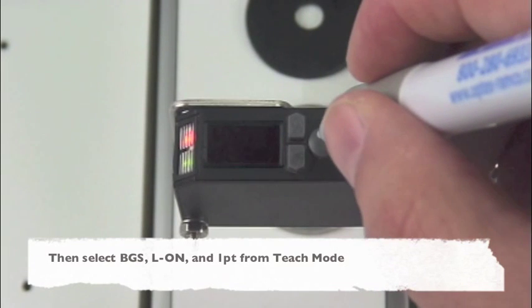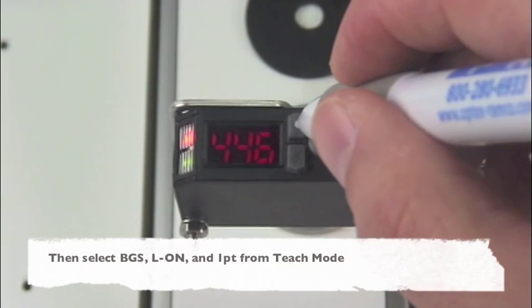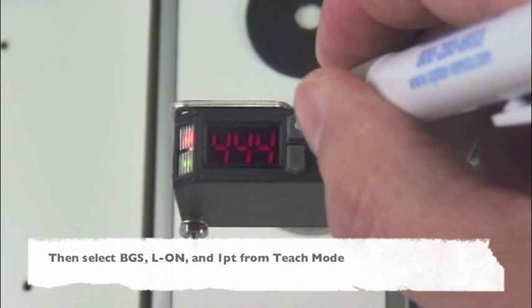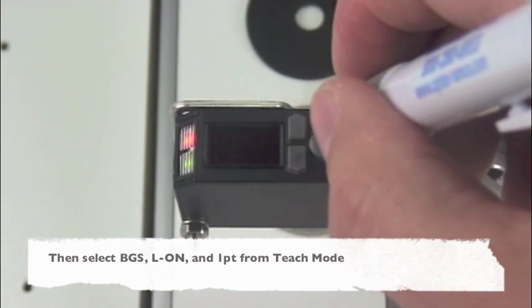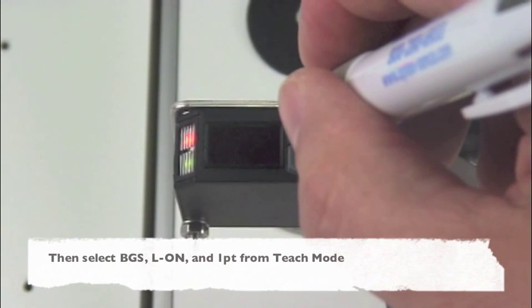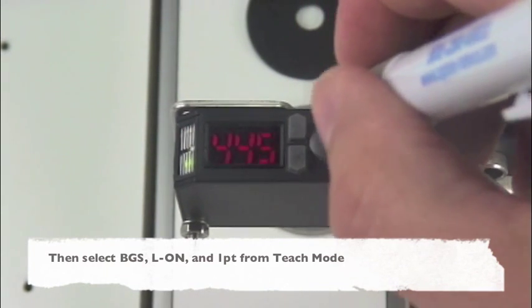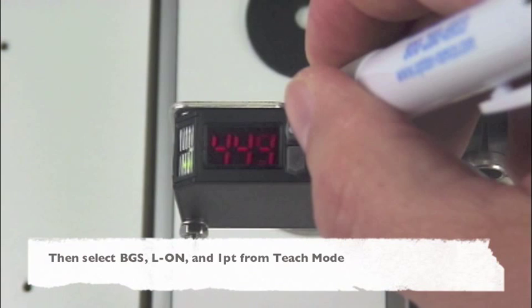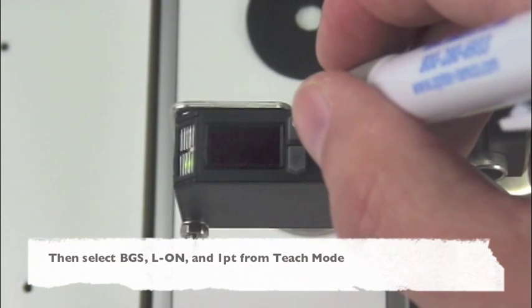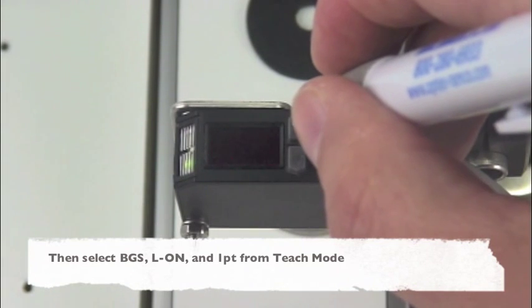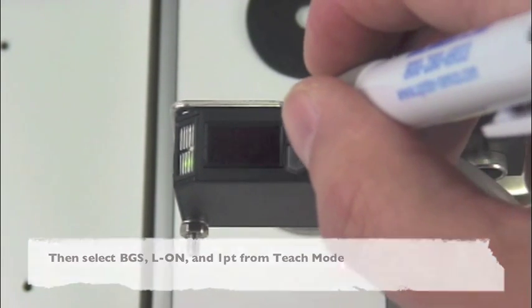Set the sensor for BGS under the F-B, then set the light on dark on the LD to light on, and then go to TCH and set for 1 point.